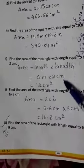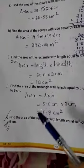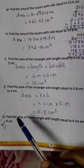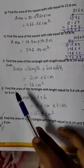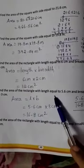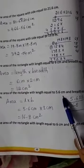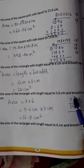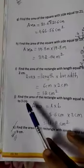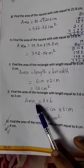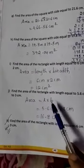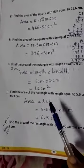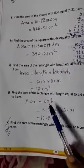Do this in your textbook. Next problem J: Find the area of the rectangle with length equal to 5.6 cm and breadth equal to 3 cm. So, area is equal to L into B — apply the formula.